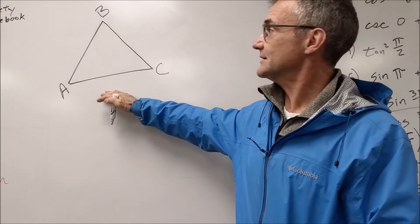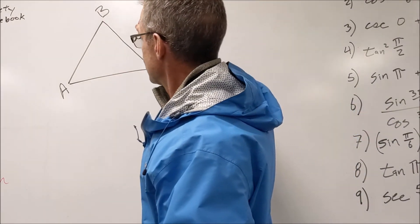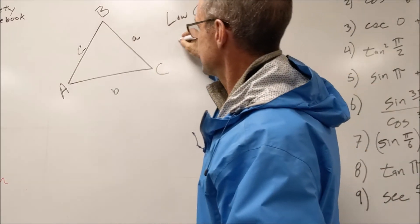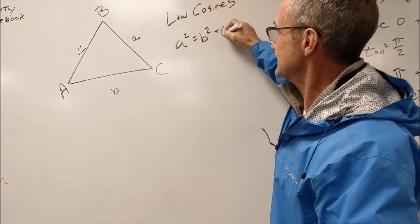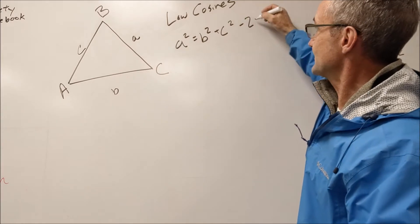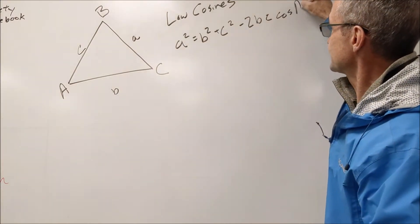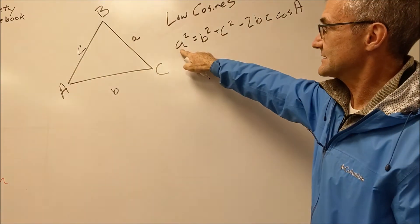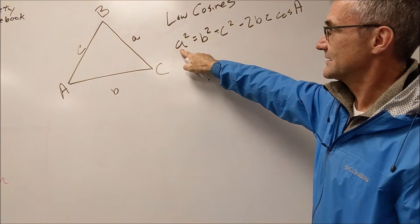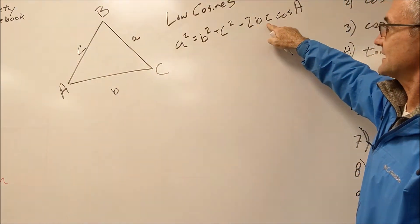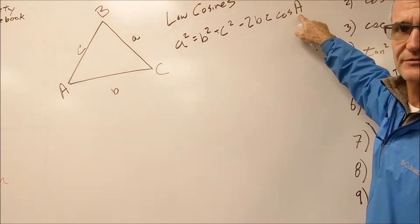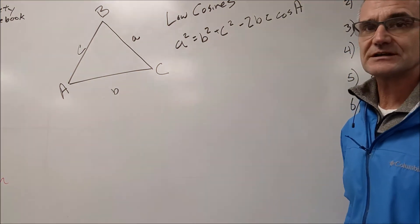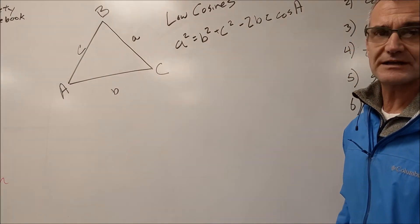So in triangle ABC, this would be side a, this would be side b, and this would be side c. The law of cosines is: a² = b² + c² − 2bc·cos(A). The key is to make sure that capital A is opposite lowercase a. There are four variables — three sides and a given angle — and you can use that equation to solve for either a side or an angle.